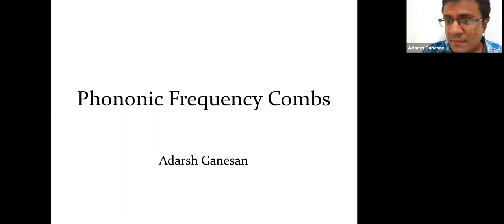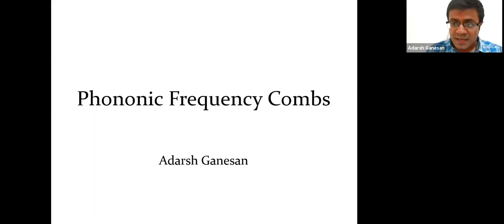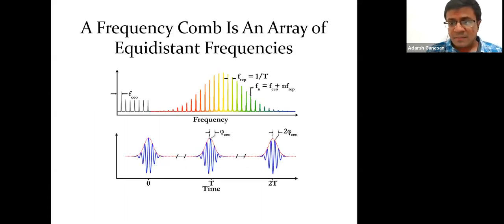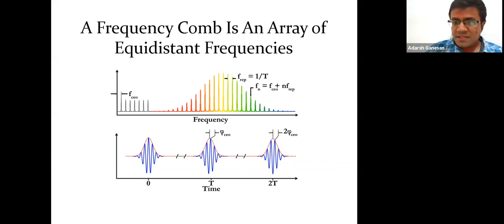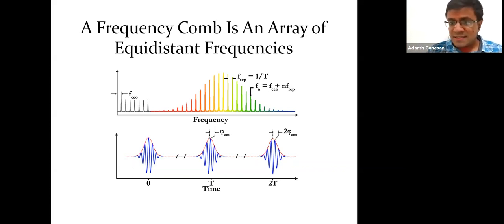So phononic frequency combs — I'm going to talk about that. Before I go into that, let me talk about frequency combs. A frequency comb is actually an array of equidistant frequencies — that's what it looks like in the frequency domain, a series of equidistant frequencies. In the time domain, these frequencies all add up together to become mode-locked pulses. That's the time domain picture and that's the frequency domain picture.